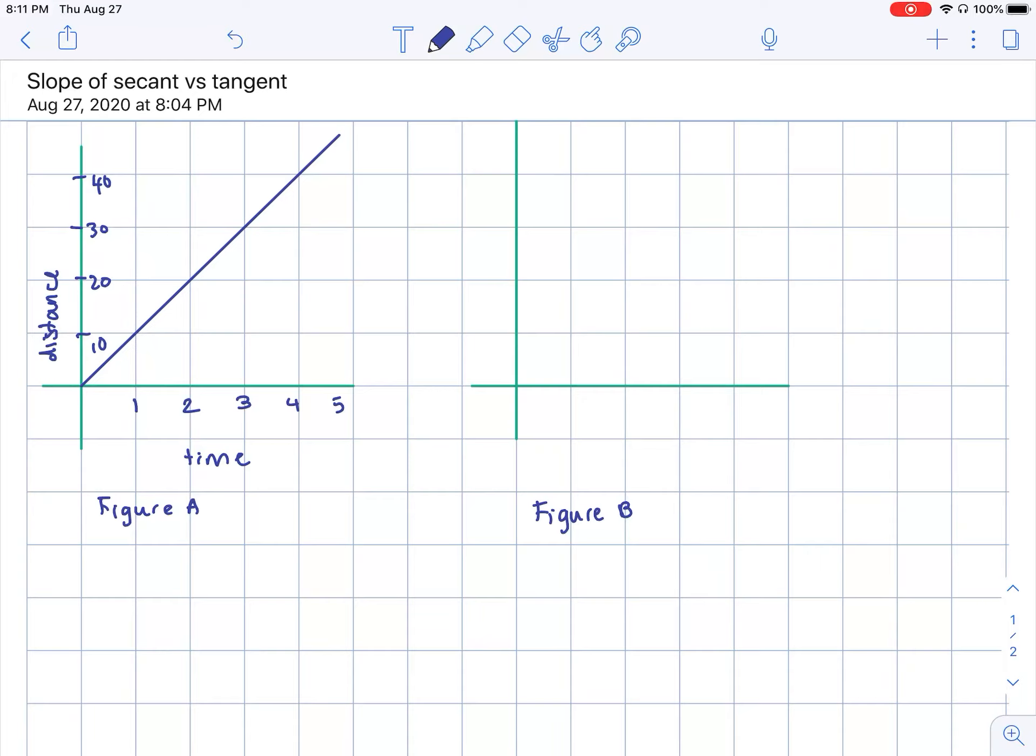We've studied linear functions and looked at its rate of change being constant. So we'll start off with the familiar, with a time-distance graph that is linear on the left, which is Figure A. So as I'm describing this, if you can grab a sheet of paper, sketch out the graph, and we'll talk about what the graph is saying.